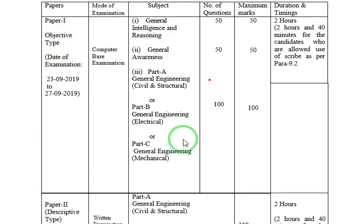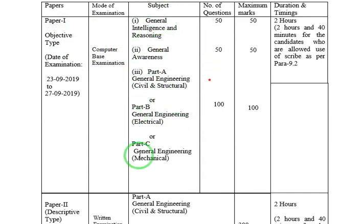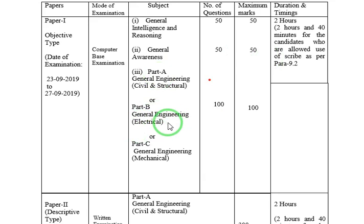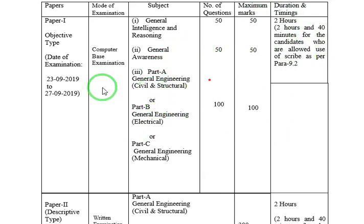In Paper 1 there are three sections: General Intelligence and Reasoning, General Awareness, and Technical. General Intelligence and Reasoning is 50 marks, General Awareness is 50 marks, and Technical is 100 marks — total 200 marks. The time limit is two hours.